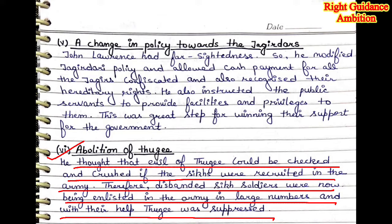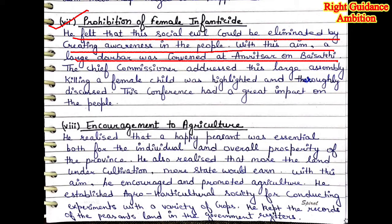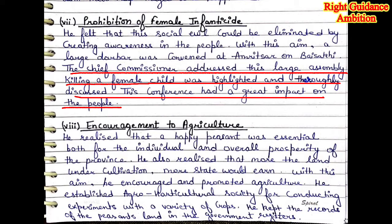Seventh point: Prohibition of Female Infanticide. He felt this social evil could be eliminated by creating awareness among the people. With this aim, a large darbar was convened at Amritsar on Baisakhi. The Chief Commissioner addressed this large assembly, highlighting that killing a female child was wrong. The conference had a visible impact — people began to understand and accept that female infanticide was a wrong practice.